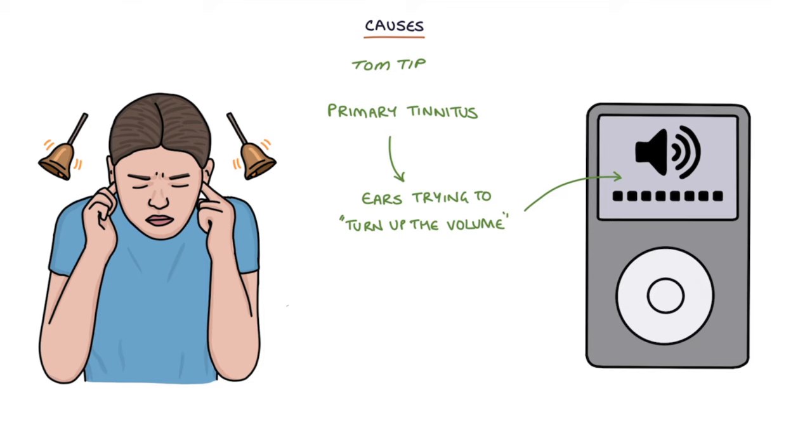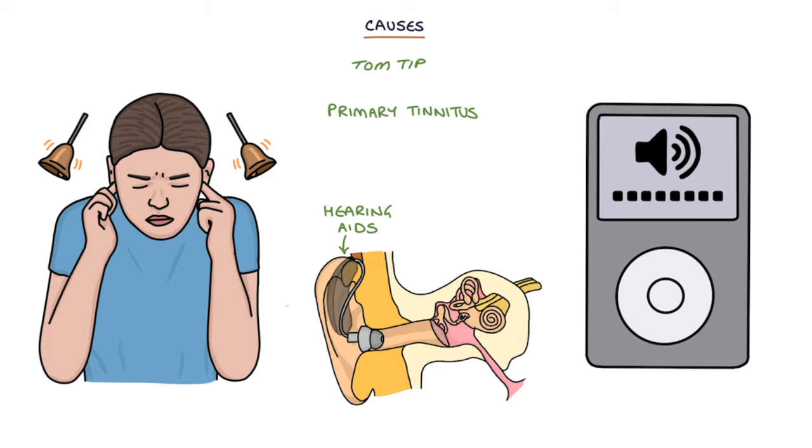Using hearing aids allows the ears to pick up noises from the environment better, so they can turn the volume down, therefore reducing the tinnitus. The actual cause of tinnitus is not entirely understood, so this is not entirely accurate, but it is a helpful analogy.